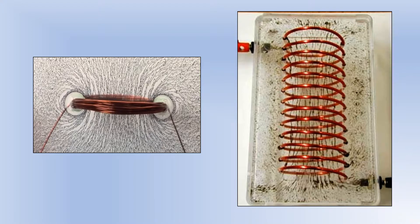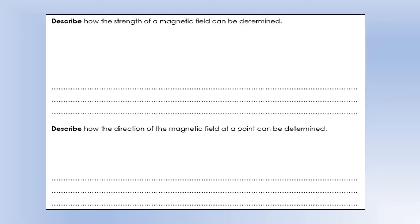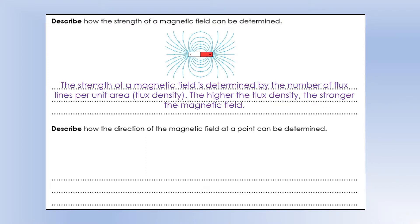Using iron filings to look at the field in a solenoid, you can see in both diagrams we get the fairly uniform or parallel field lines in the middle, and outside the coil the field is much more similar to a bar magnet. With an electromagnet, one of the benefits is we can change how strong it is. The strength is indicated by the flux density - the number of flux lines per unit area. The higher the flux density, the stronger the magnetic field. As you move further from the magnet, the spacing between field lines gets bigger, meaning magnetic field strength decreases with distance.